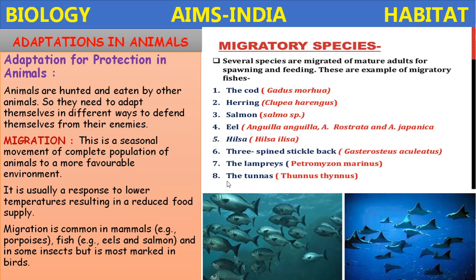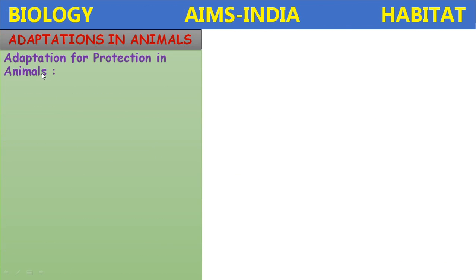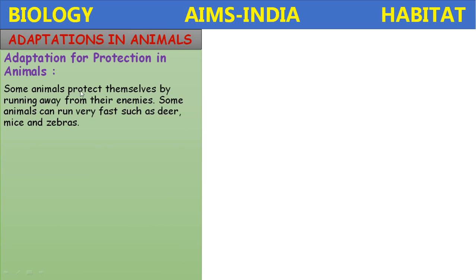Some examples of migratory fishes are: codfish, herring, salmon, eel, hilsa, three-spined stickleback, lampreys, and tunas. Most marine fishes move from unfavorable conditions to favorable conditions due to adverse climatic changes, and then come back again. This type of migration in fishes is called anadromous migration — sea to river — and catadromous migration — river to sea.